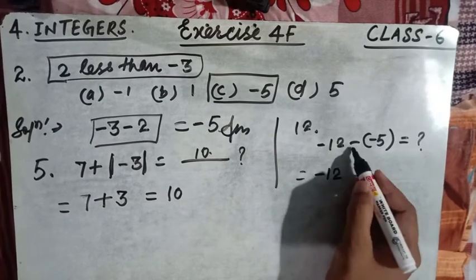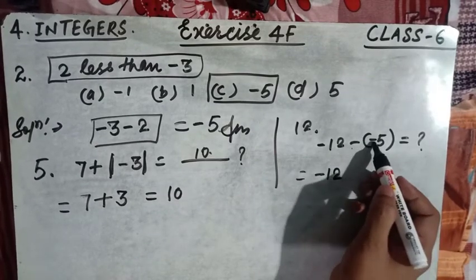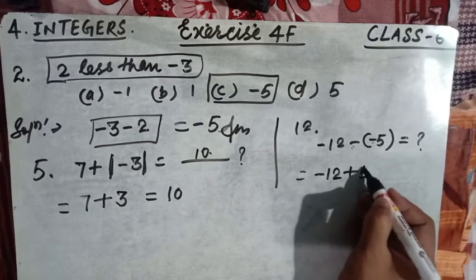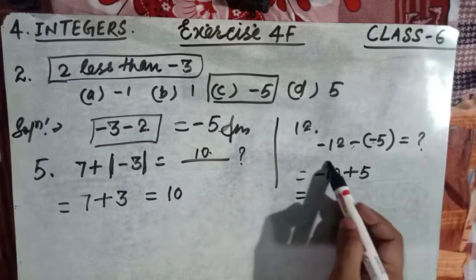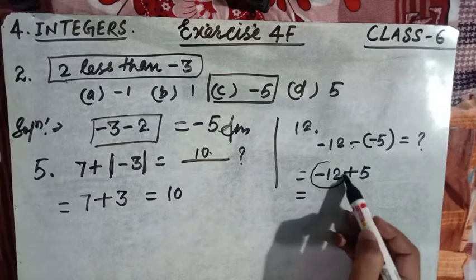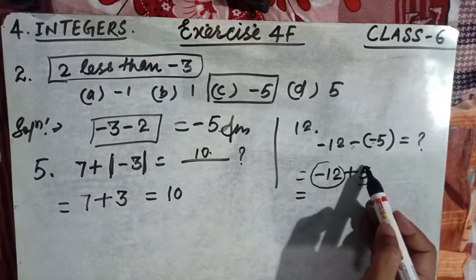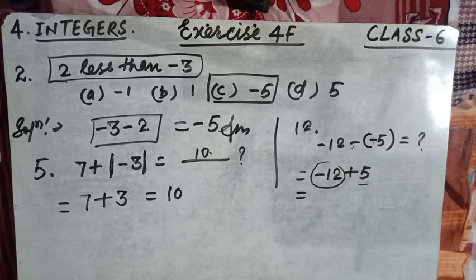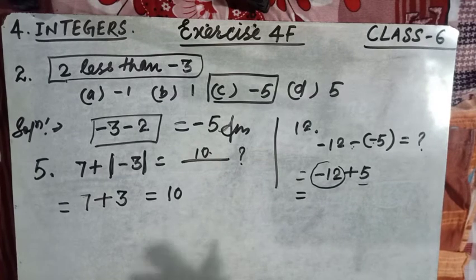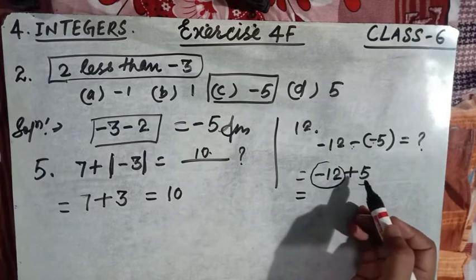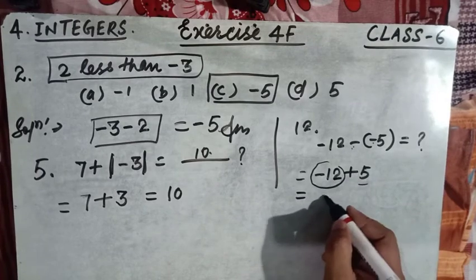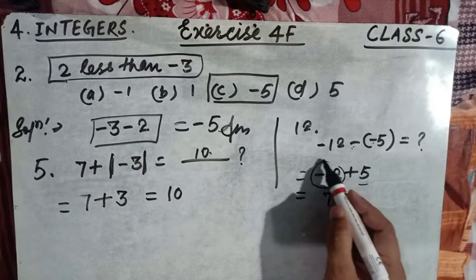So first write it as it is: minus twelve. Now this minus is going to be multiplied with minus, so minus into minus gives plus, and this is five. Now one number is negative and the other is positive, so we have to subtract their values. Twelve minus five equals seven.